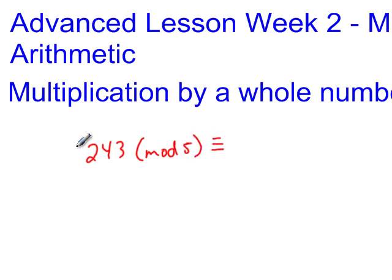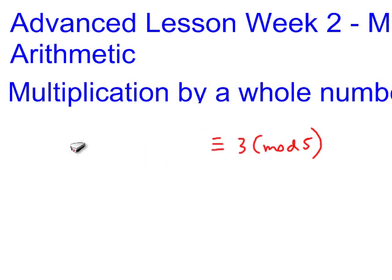Well, 243 is equivalent to 3 mod 5, because when you divide 243 by 5, you get remainder 3. So we can say that 243 is equivalent to 3 mod 5. So the question is, what if I needed to find out the mod 5 answer to 243 times 61?